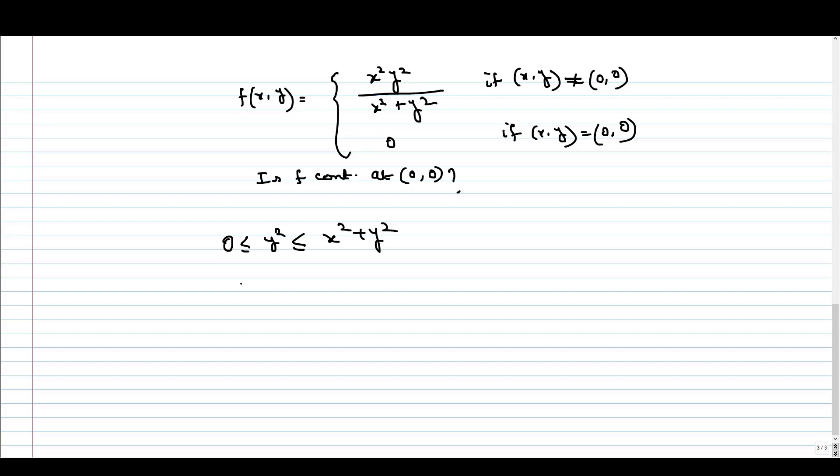Now I can write it as y²/(x² + y²) ≤ 1, so this y²/(x² + y²) lies between 0 and 1.